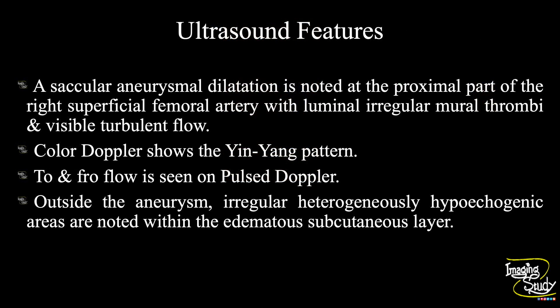In summary, a saccular aneurysmal dilatation is noted at the proximal part of the superficial femoral artery with luminal irregular mural thrombi and visible turbulent flow on color Doppler. A yin-yang pattern is noted; to-and-fro flow is seen on pulse Doppler. Irregular heterogeneously hypoechoic areas are noted within the edematous subcutaneous layer adjacent to this saccular aneurysm, indicating hematoma.